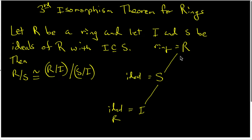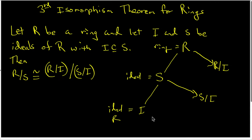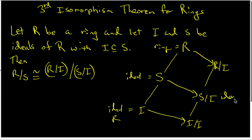Because I is an ideal of R, we know that R mod I exists. The correspondence theorem says if we use the natural map or canonical map, we can take all of the subrings that contain I into subrings of R mod I. Any ideal over here corresponds to an ideal over here. It's also important to understand that I mod I is just the zero of this ring, which would be zero plus I.